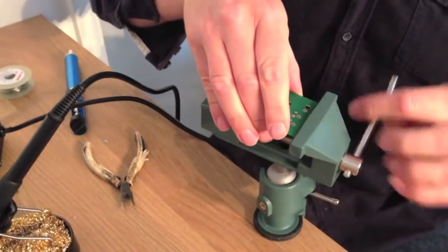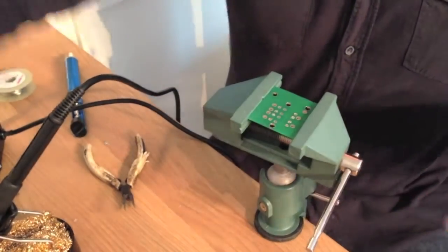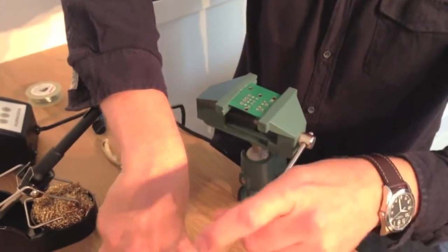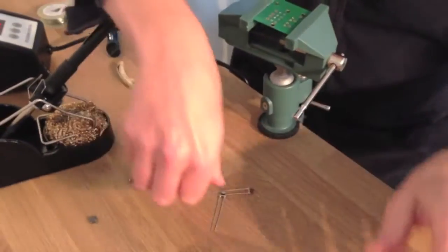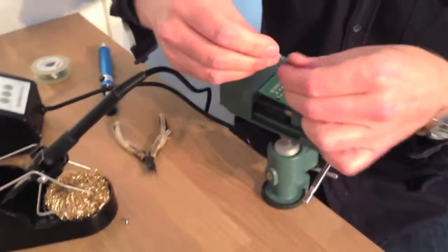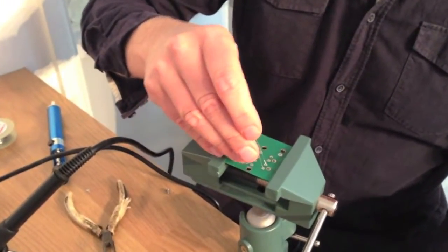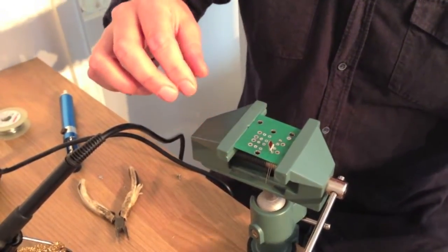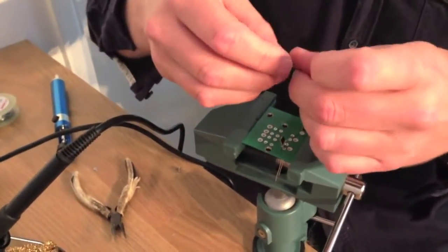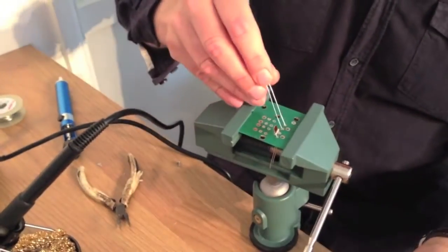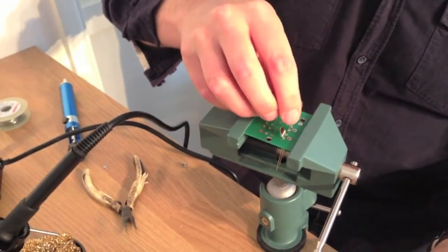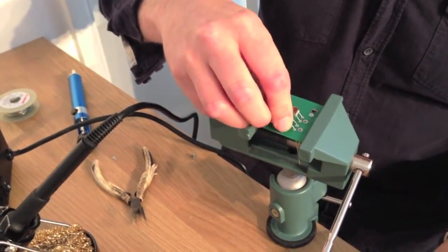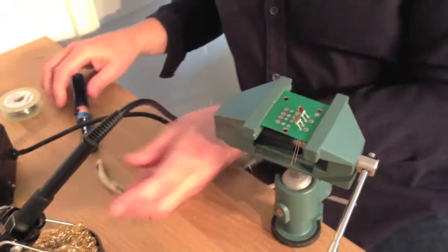Now put the resistors in. Put them the same way around. You don't want to distress the chip, you want to have a bit of a lead length. Probably about there will be fine.